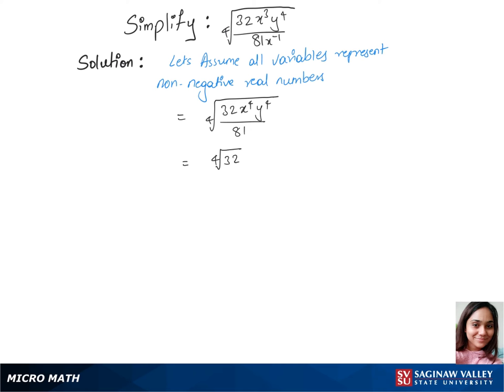And our next step, we'll separate this 4th root. So that's 4th root of 32 times 4th root of x power 4 times 4th root of y power 4 over 4th root of 81.